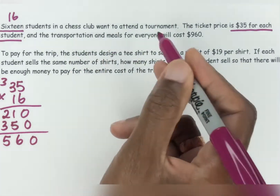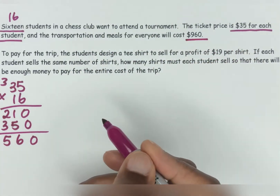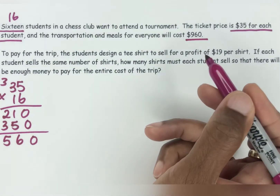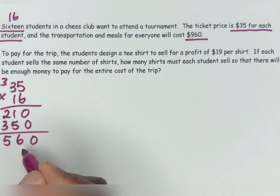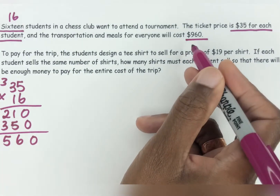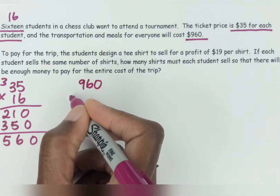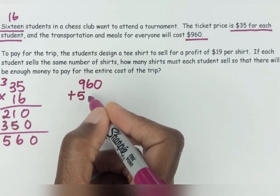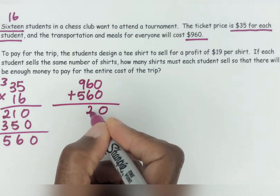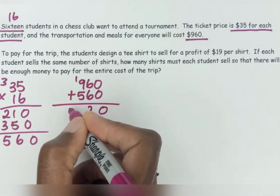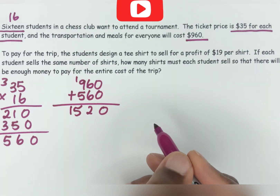And then the transportation and meals for everyone will cost $960. So now we need to add up the ticket price, transportation and meals for everybody. So we're going to add 560 to 960. I always like to put the biggest number on top, but it doesn't matter which way around you put it. So we get 1,520.